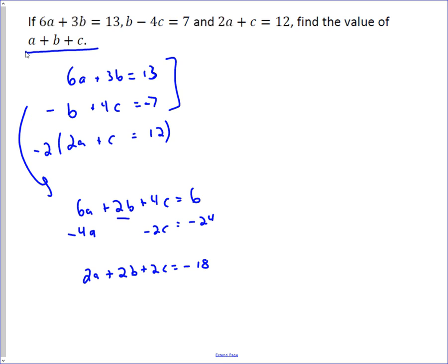Divide everything by 2, and you get a plus b plus c equals negative 9. And so we were able to, by doing some clever combinations of these three equations, determine what a plus b plus c is without ever actually finding the variables themselves.